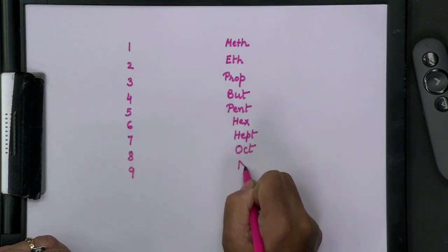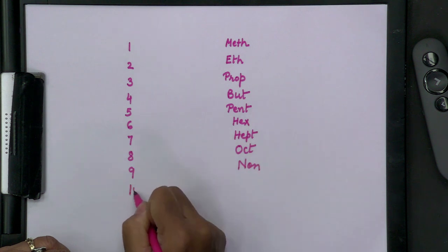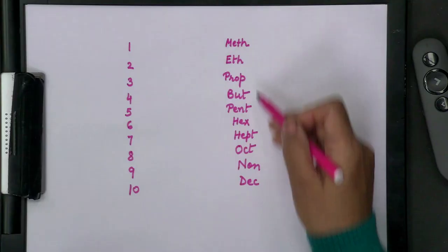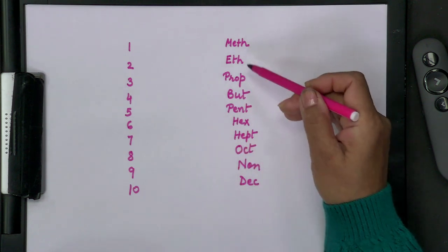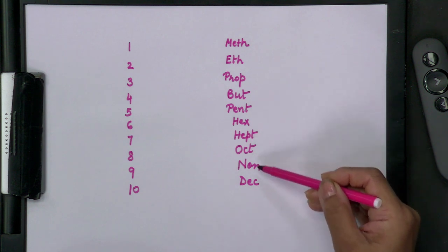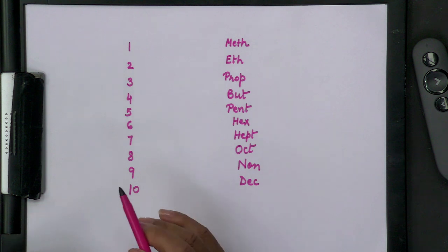Continuing the prefixes: 7 carbon atoms — 'hept'; 8 — 'oct'; 9 — 'non'; 10 — 'dec'. After ten there are more (undecane, dodecane, etc.) but that is beyond the scope of class 10. So to summarize: meth, eth, prop, but, pent, hex, hept, oct, non, dec. Look at the number of carbon atoms in the given compound and start the name with the corresponding prefix.